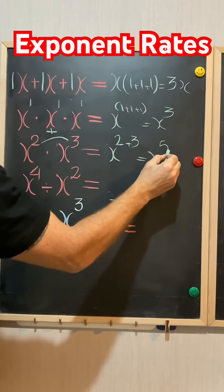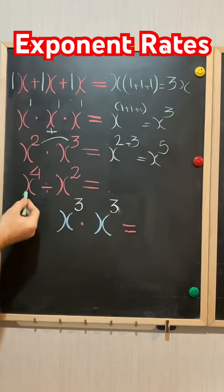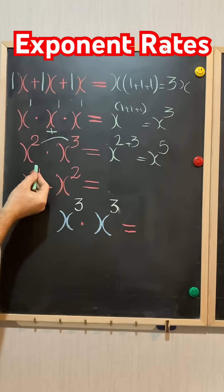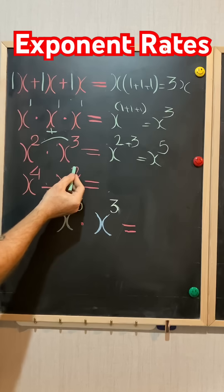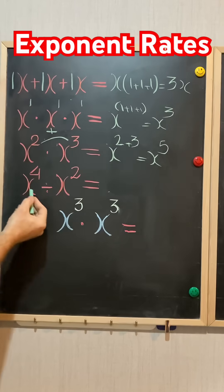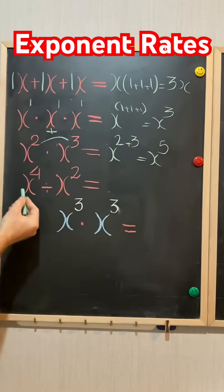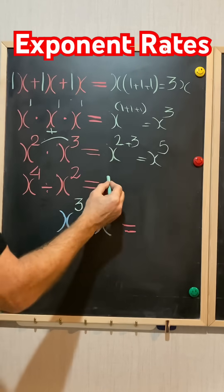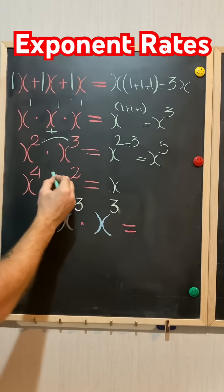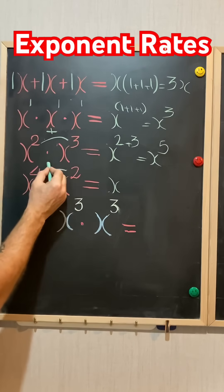x to the power of 4 divide by x to the power of 2 — again, same base, different exponent. Write the base and subtract the exponents.